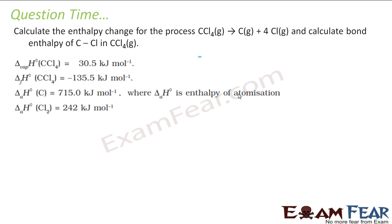Here we have to find the enthalpy change for this reaction: CCl4 gives carbon and chlorine. Now we have to find the bond enthalpy of CCl. So that will be 1/4 of whatever enthalpy we get here, right? Because we have 4 CCl bonds. And we have this data given.